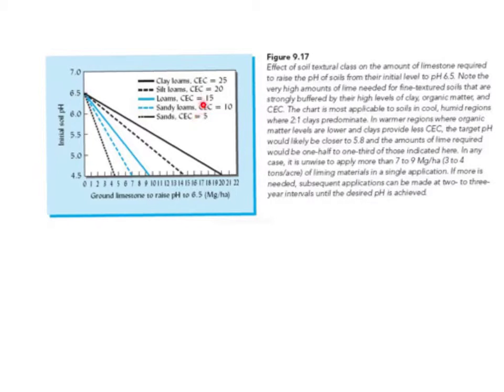As we move up this chain here, we go to loams, this solid blue line, and we see that for a loam, we're going to need almost 10 megagrams per hectare of ground limestone to get it to a higher pH.